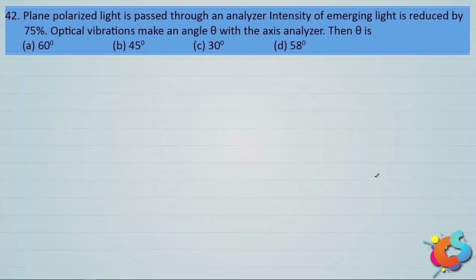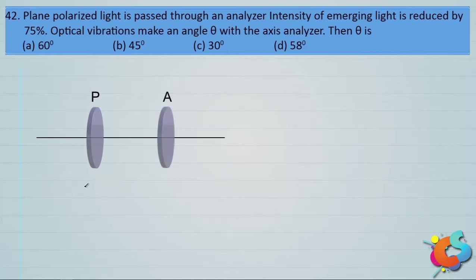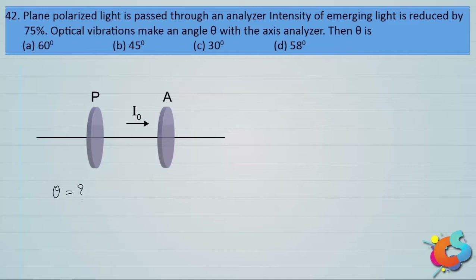It is a system of two polaroids — one is the polarizer and the other is the analyzer. The angle between their axes is given by theta and that is what we need to find. The intensity of light incident on the analyzer is I₀, and after passing through the analyzer its intensity gets reduced by 75%. When the intensity is reduced by 75%, it means it comes down to 25% of I₀, which is I₀/4.